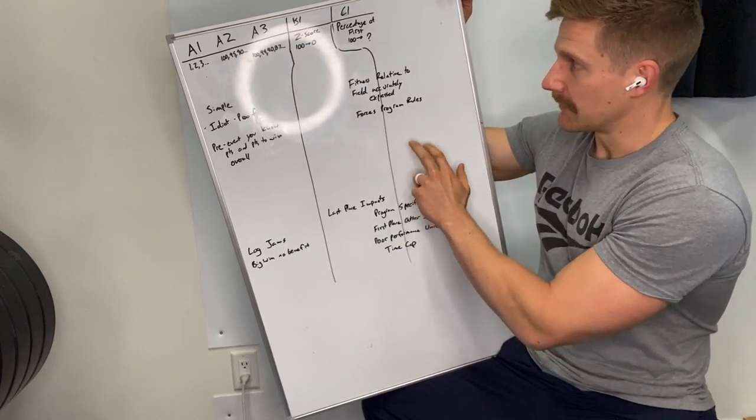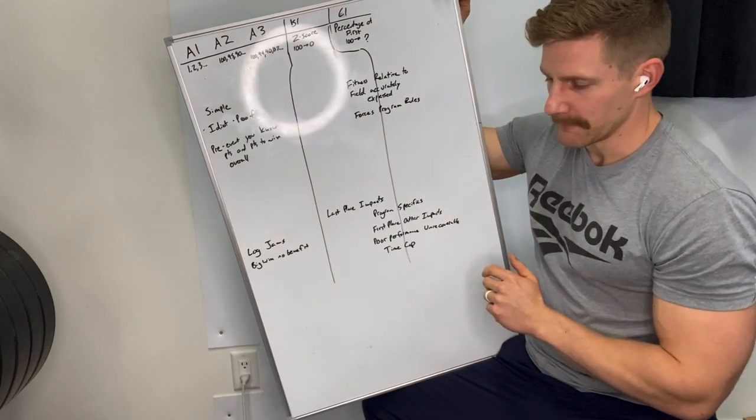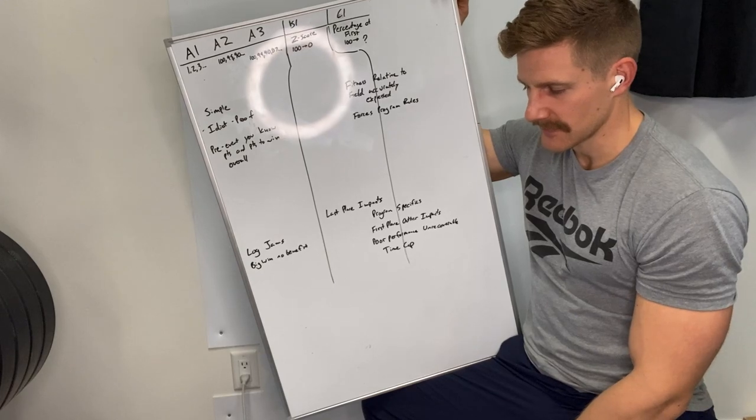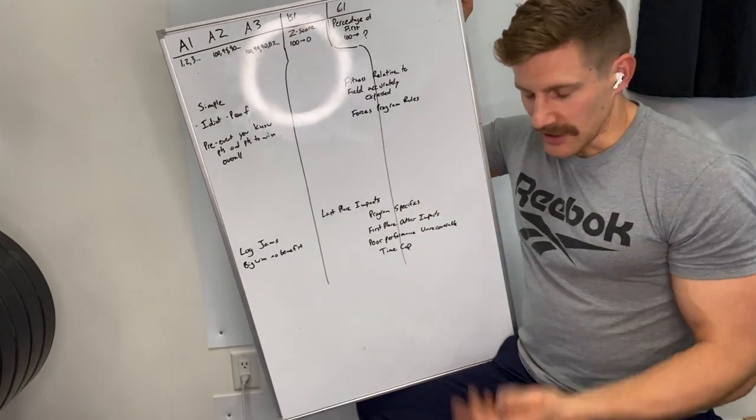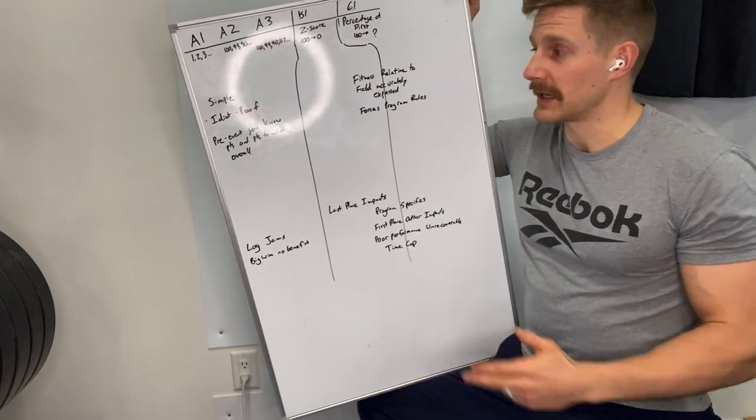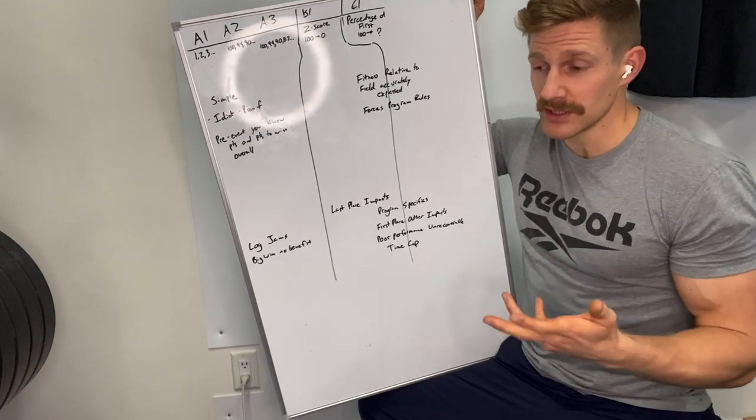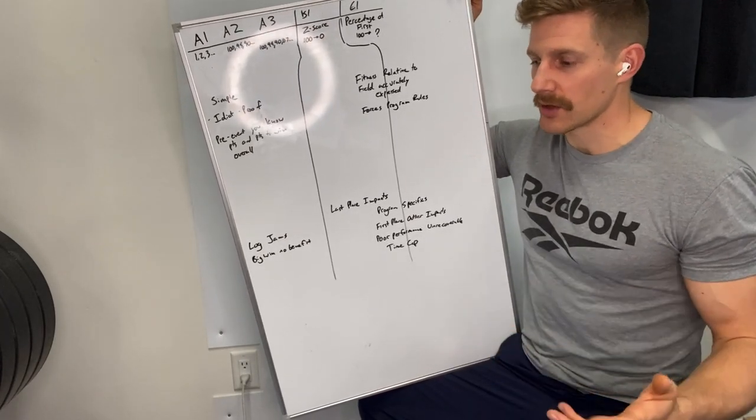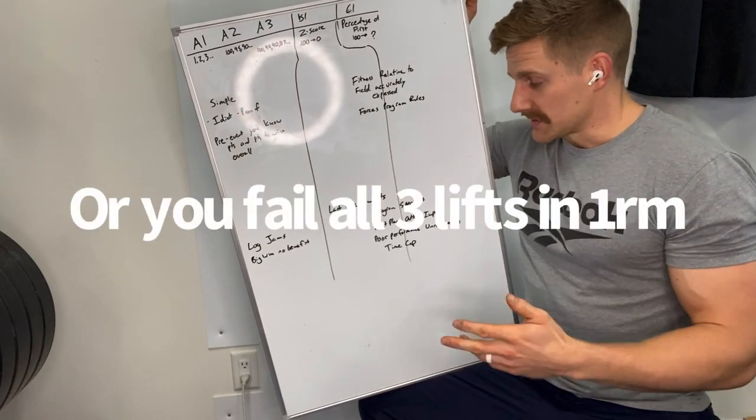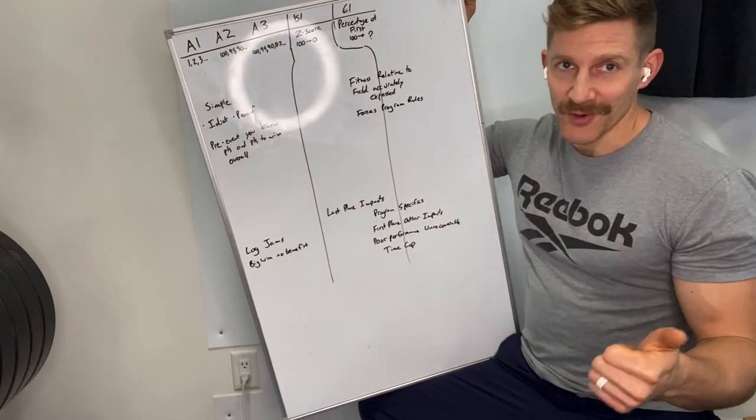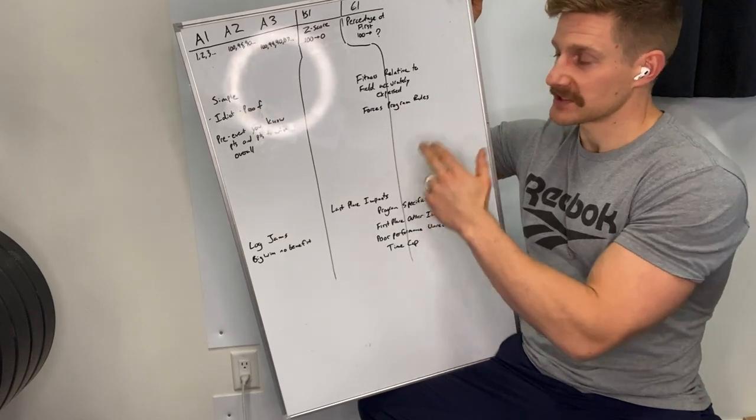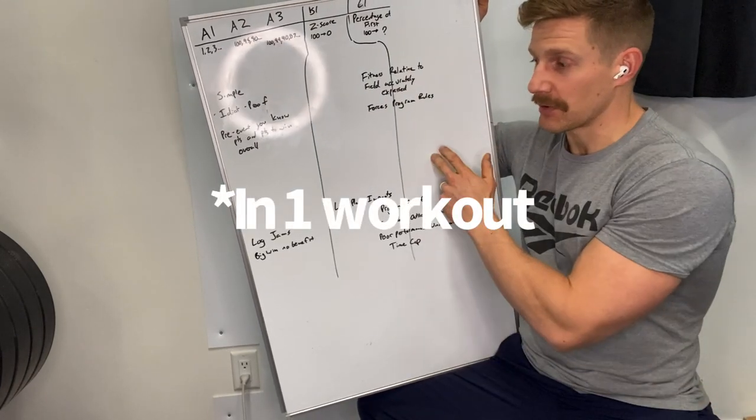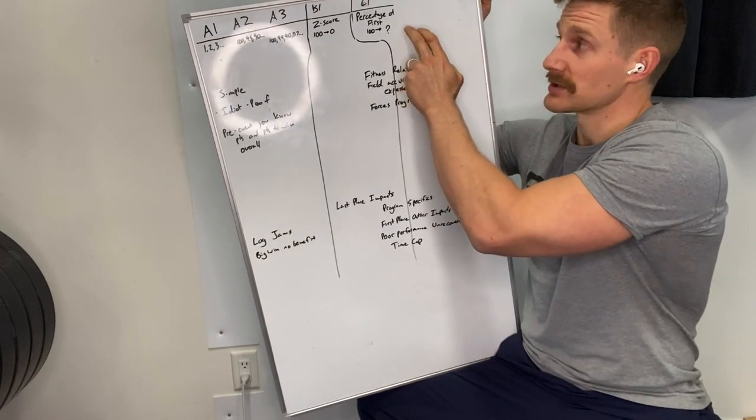For both of these systems, other issues are programming specifics and first place outlier impacts. It's the same as last place but not as important. If you do have a field where you have a total freak that can deadlift 700 pounds or can swim really fast, they're going to skew those scores in a really big way. They're going to potentially get this points lead that becomes hard to recover from in events where everyone's kind of on the same playing field.